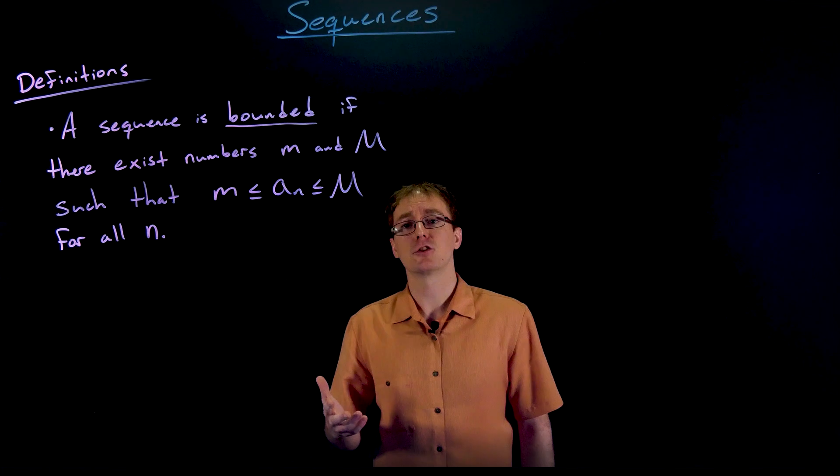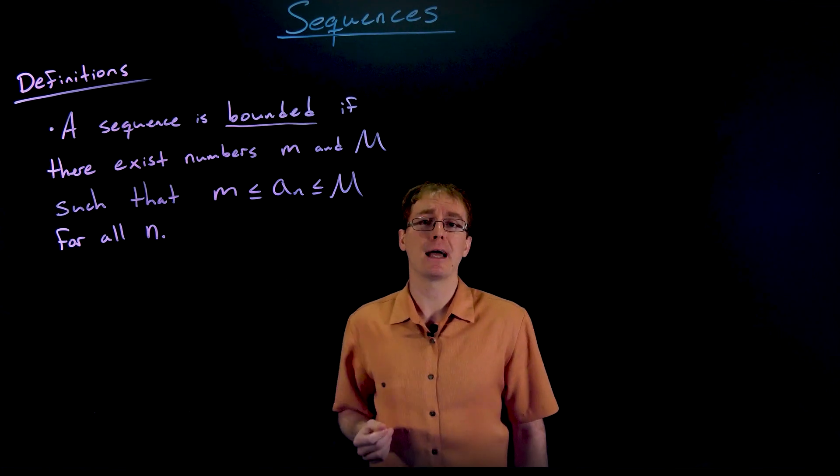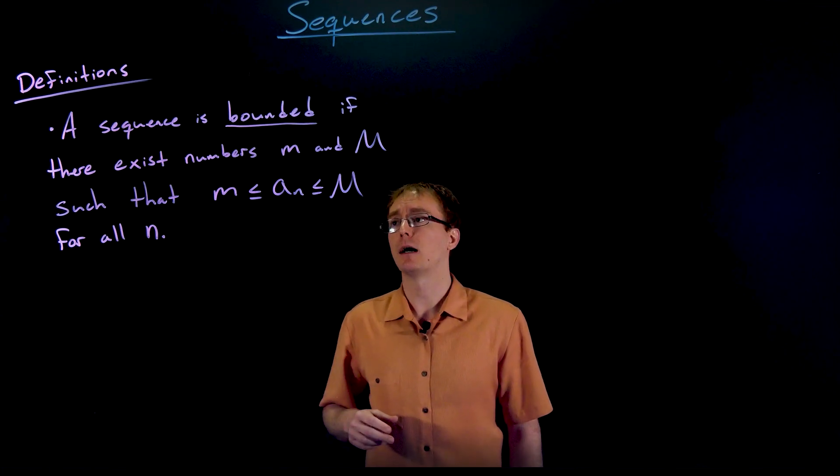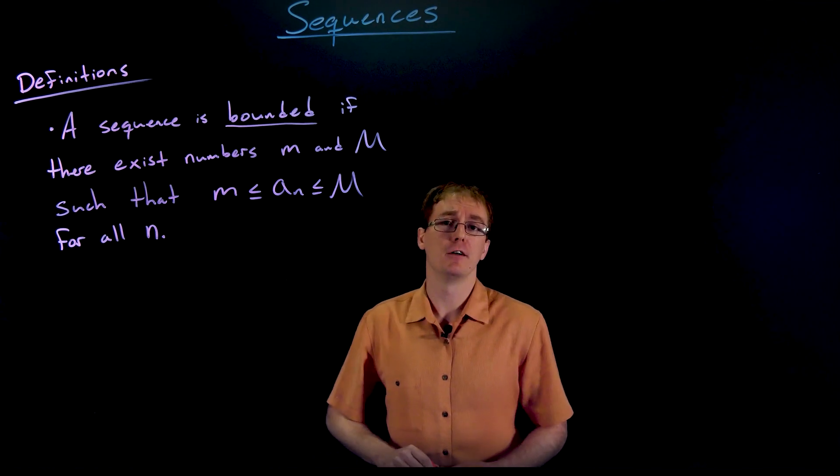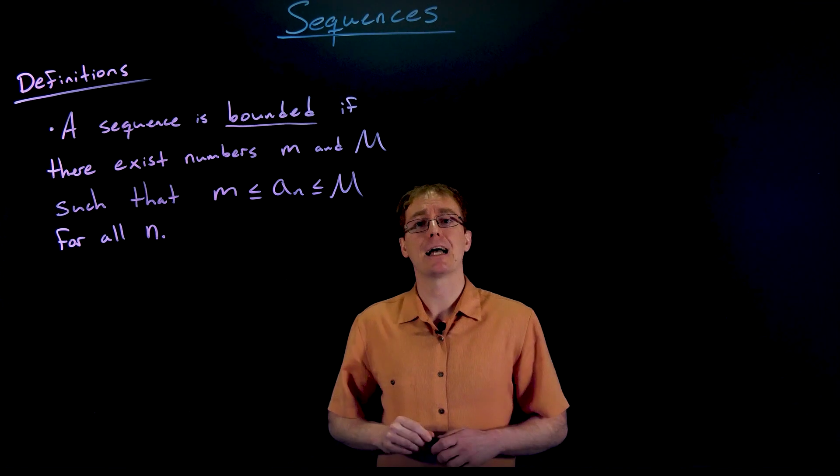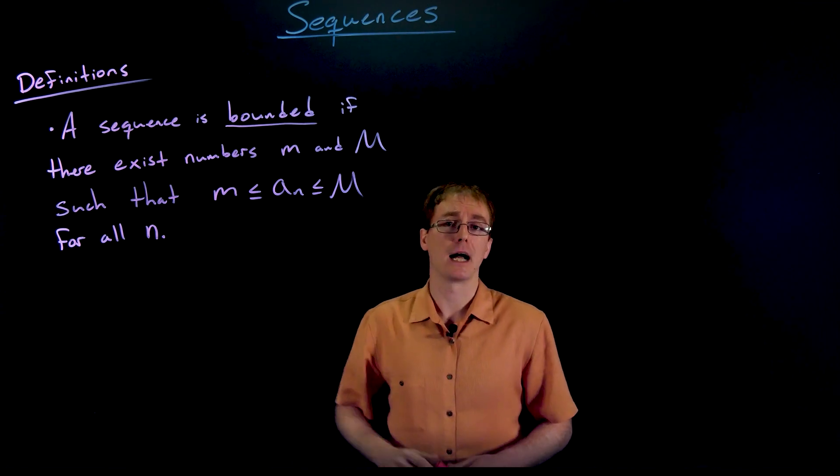There are cases where our sequence is not totally bounded, but only bounded from one side. So it might be bounded from below or bounded from above. But in order to be bounded, it has to be bounded on both sides.